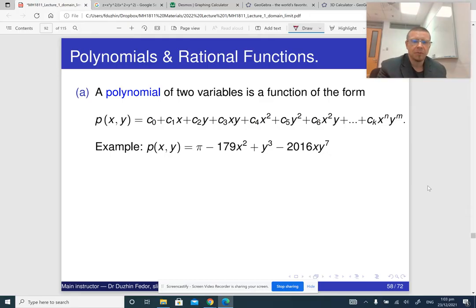So first, what is a polynomial? A polynomial in one variable is just the sum of powers of this variable with some coefficients. So a polynomial in two variables is the sum of products of powers of two variables. So anything that involves powers of x, powers of y, their products, and the sum of such terms is called a polynomial.